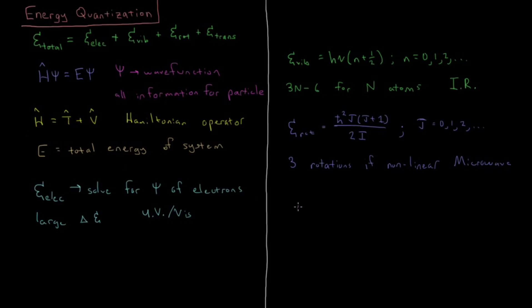Then lastly we're going to talk about translations. Translational energy of a given molecule is going to be Planck's constant squared over 8mL², where L is the length of a given container or the length of a box if you have a particle in a box, and then times a quantum number n².